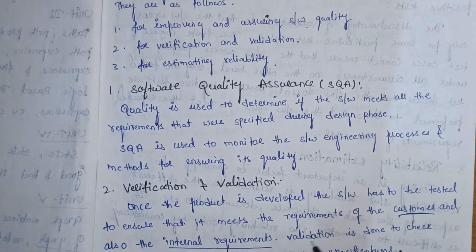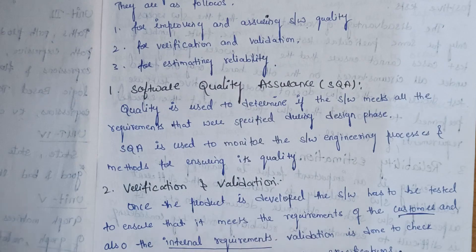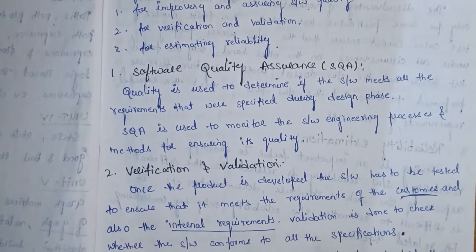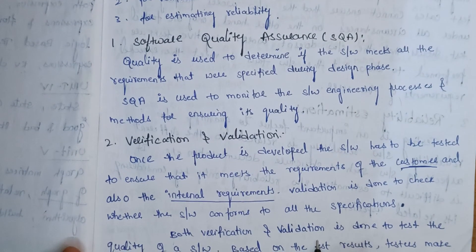Validation is done to check whether the software conforms to all the specifications. Both verification and validation are done to test the quality of a software based on the test results.